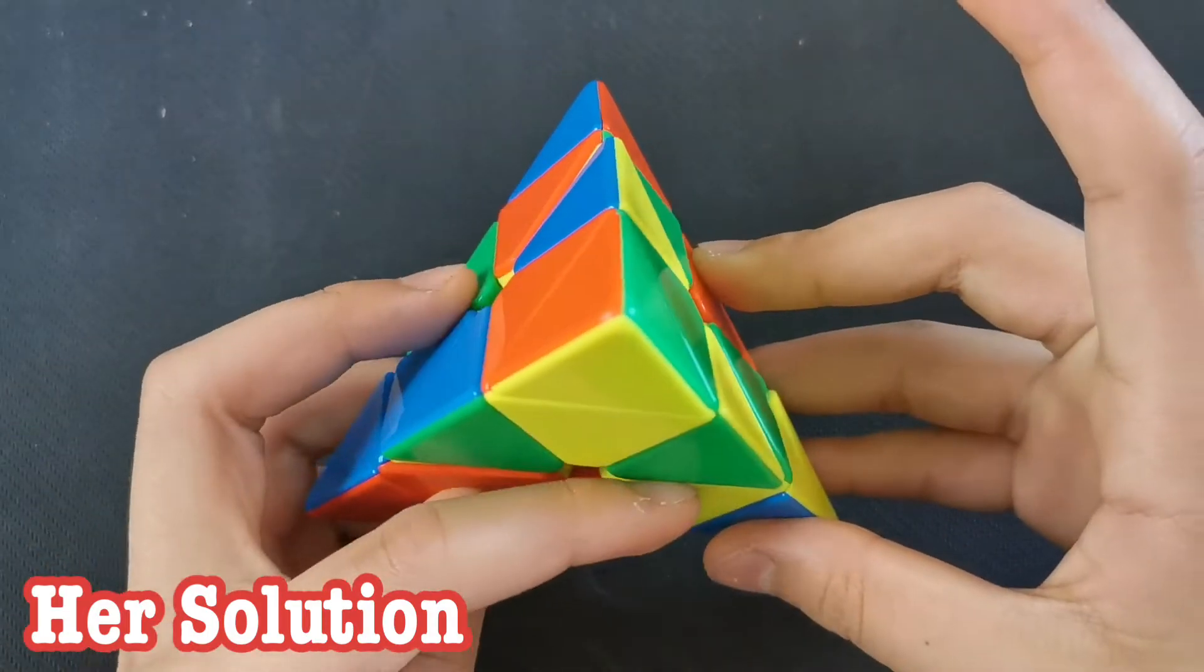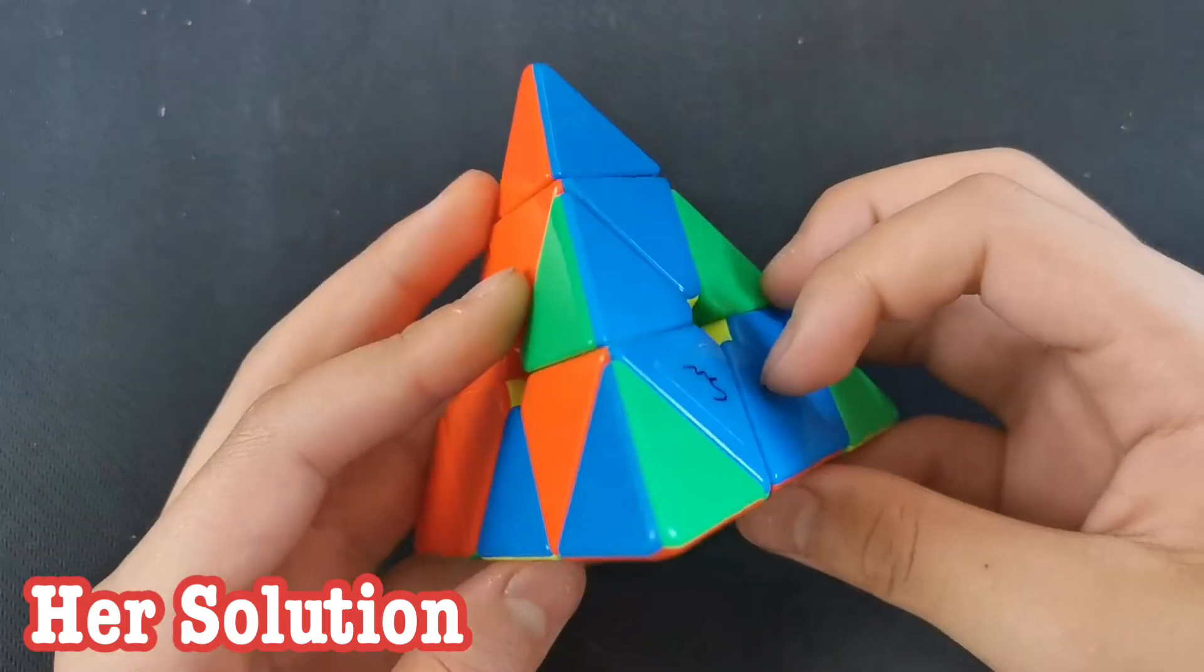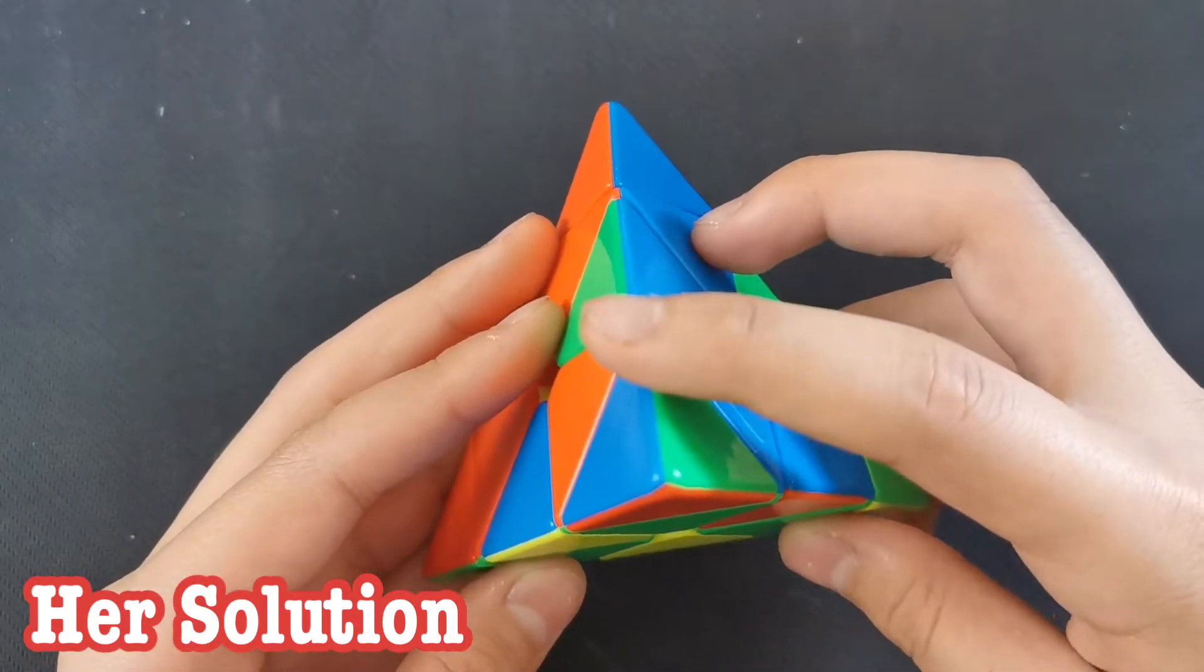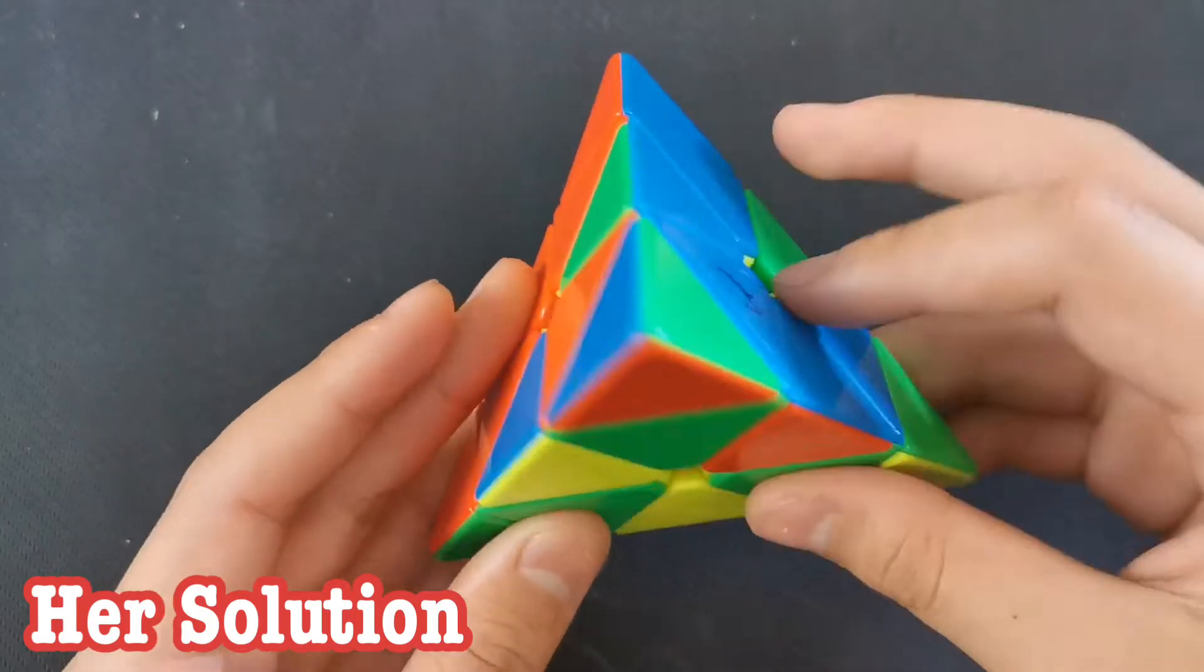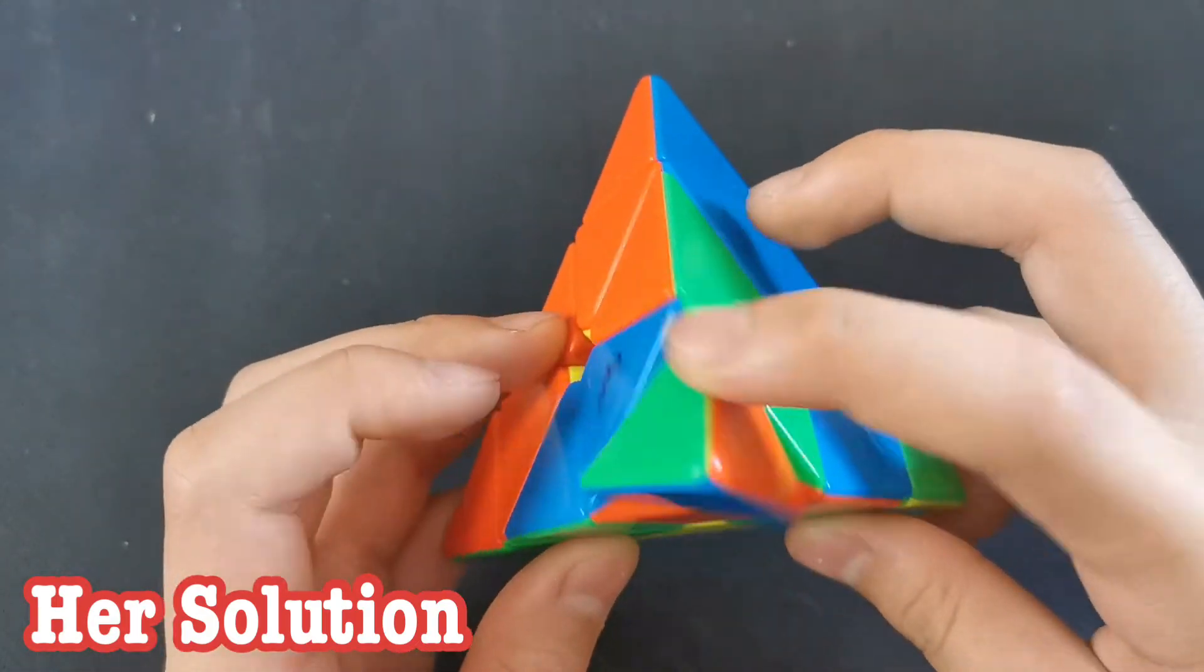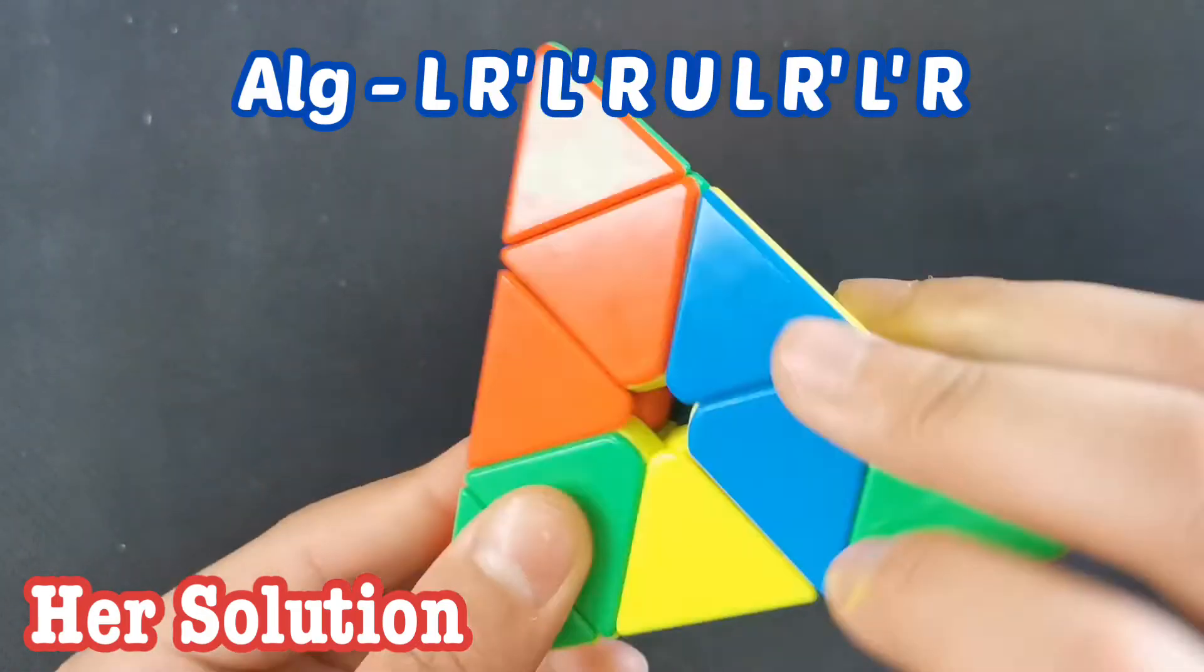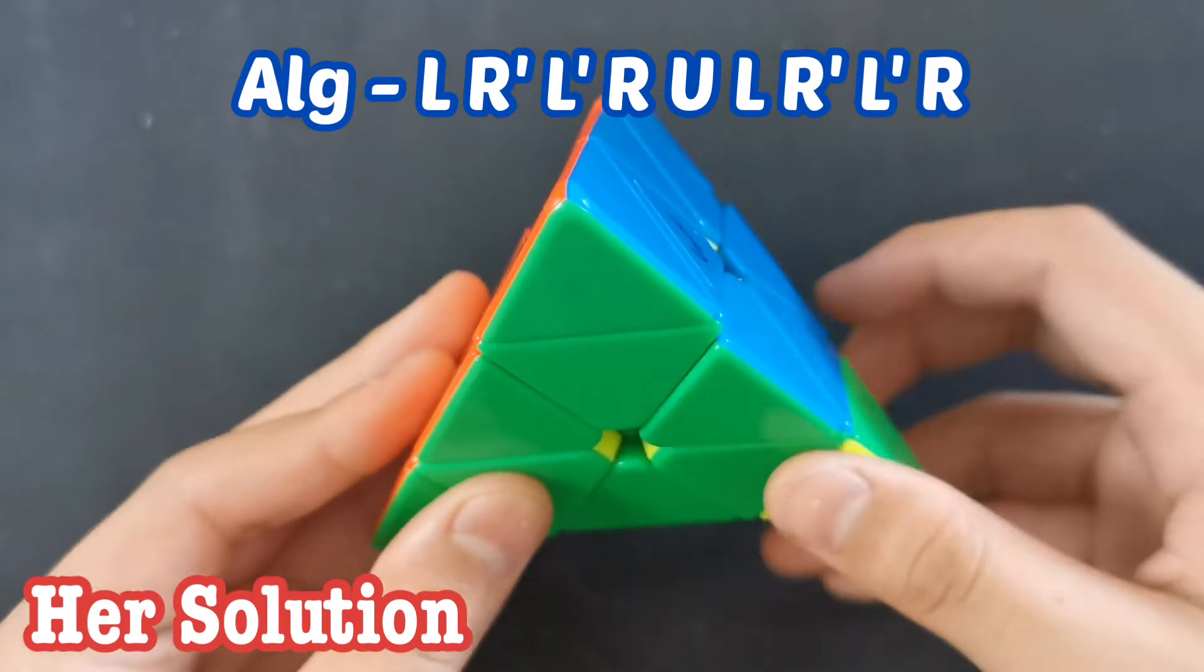Tip, U', L', rotate, you solved the back with R', U', R, you solved the tip, then you did hedge, U, hedge, tip.